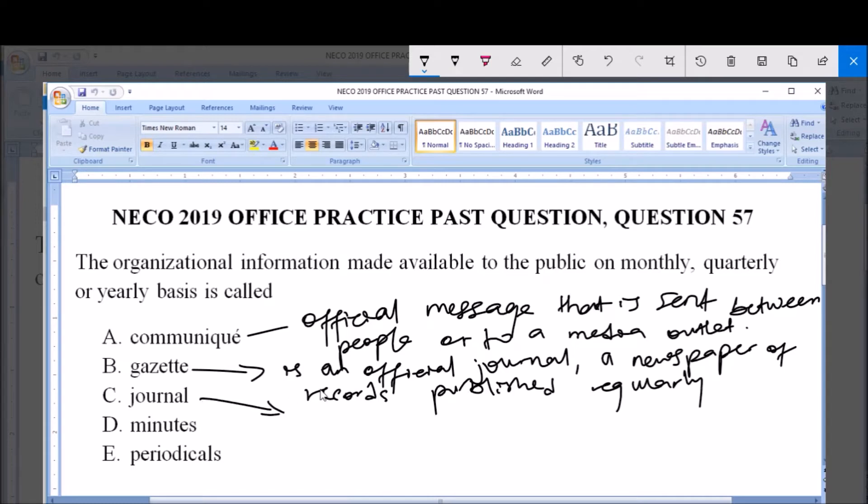Now, this is journal. The journal is a collection of articles that is published regularly throughout the year.